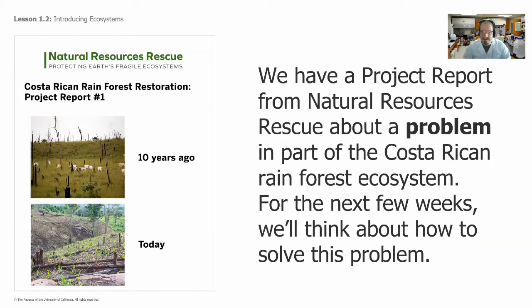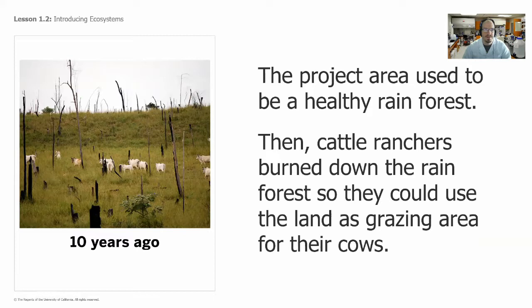We have a project from the Natural Resources Rescue about a problem in part of the Costa Rican rainforest ecosystem, and over the next few weeks we're going to think about how to solve that problem. The project area used to be a healthy rainforest. Then cattle ranchers came in and burned down the rainforest so they could use the land as a grazing area for their cows. A lot of rainforest destruction these days is so that land can be used for farming or raising cattle.